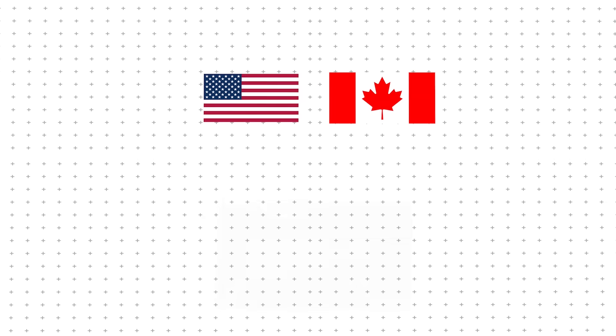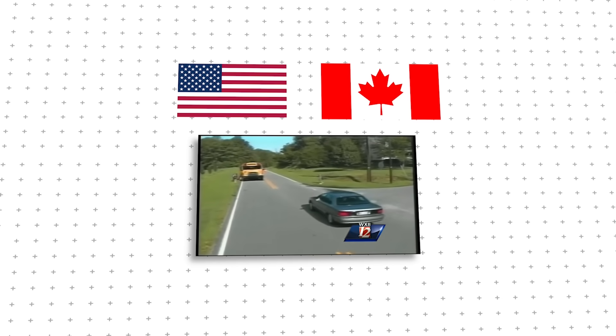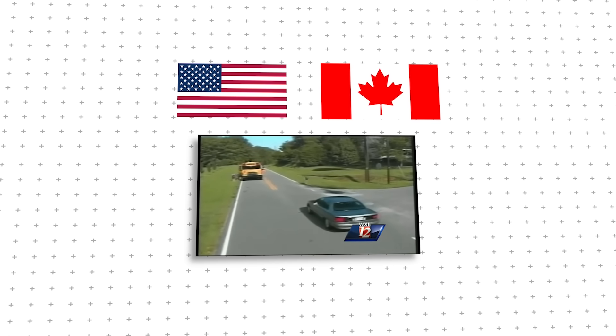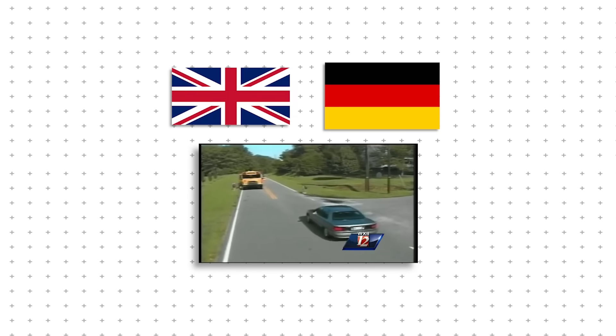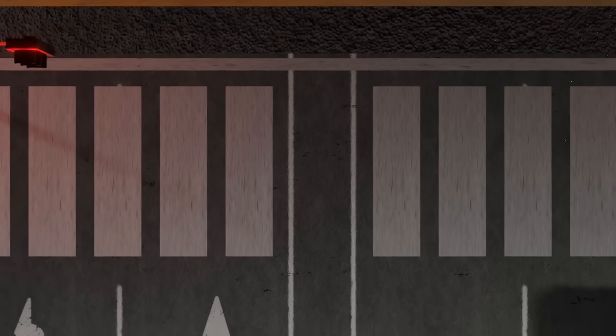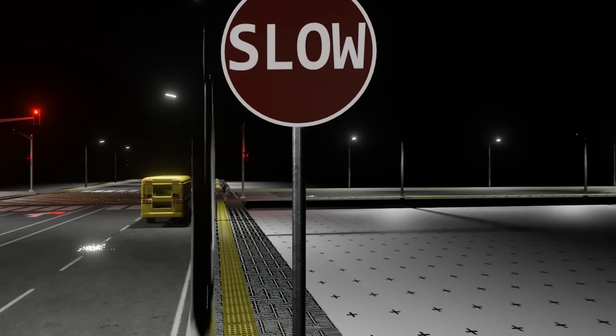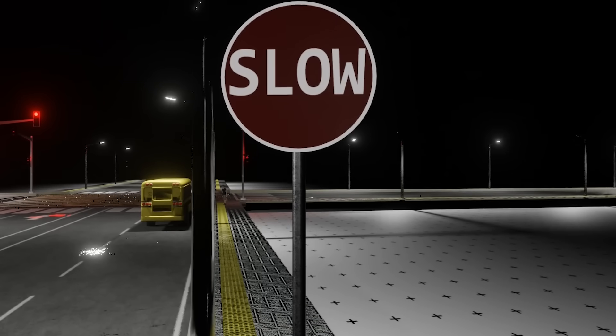Traffic laws also play a key role. In the U.S. and Canada, when a school bus extends its stop arm, drivers are legally required to stop, even on multi-lane roads. But in the U.K. and Germany, that law doesn't exist. Cars are allowed to pass stopped school buses as long as they do so cautiously. Instead of strict stop laws, these countries focus on pedestrian safety, well-marked crosswalks, and lower speed limits near schools. The burden falls more on the students to be aware of their surroundings.